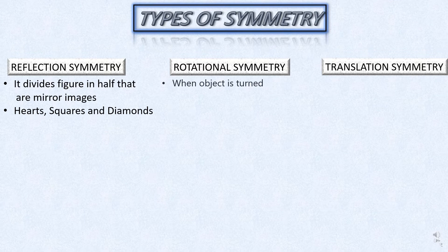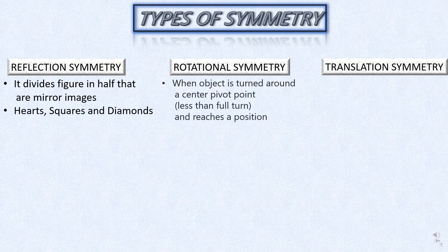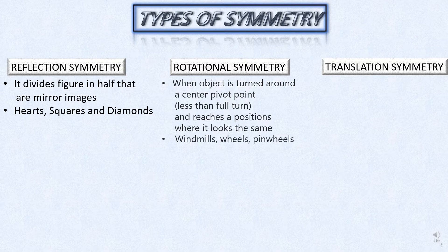What is rotational symmetry? When an object is turned around a center pivot point less than a full turn and reaches a position where it looks the same. For example, windmills, wheels, and pinwheels.